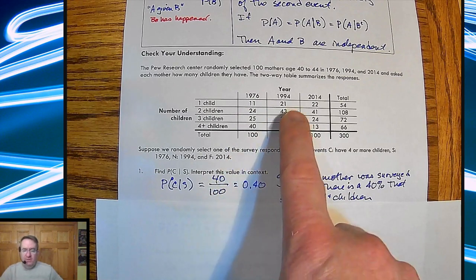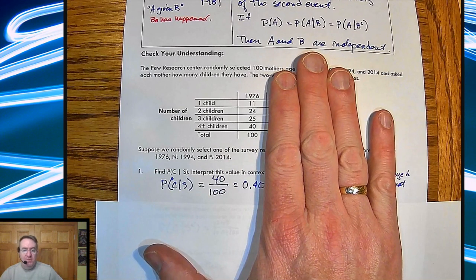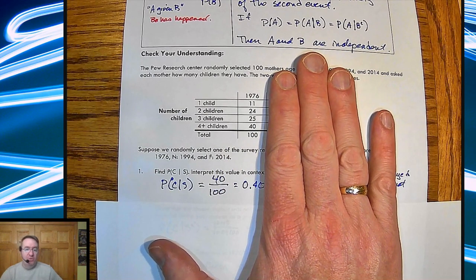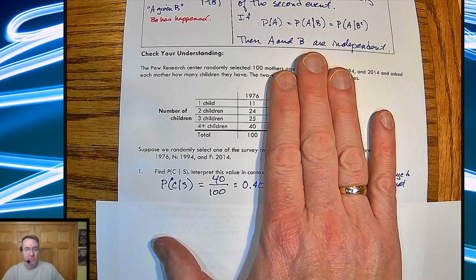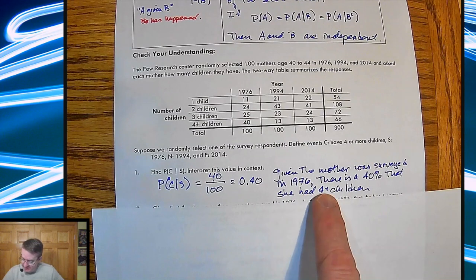And so for there, we're in this group right there only. So that means I've got 40 people, 40 mothers who have four or more children, 100 mothers total. So it's 40 out of 100, or 40%. So given the mother was surveyed in 1976, there's a 40% probability.